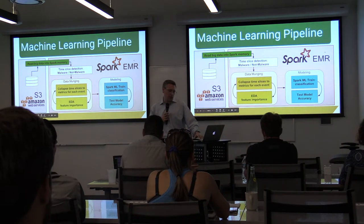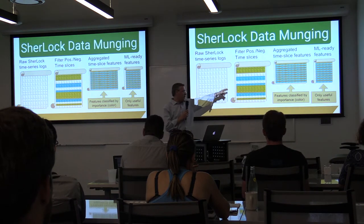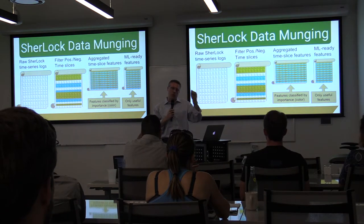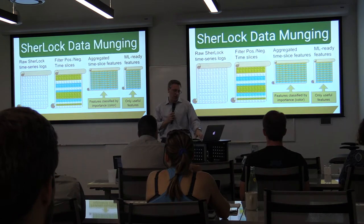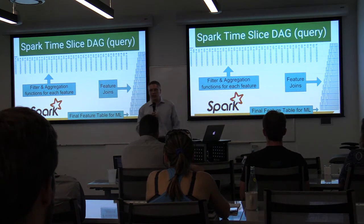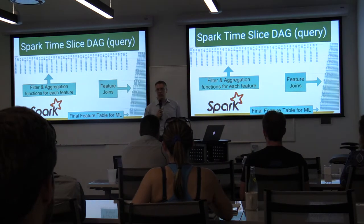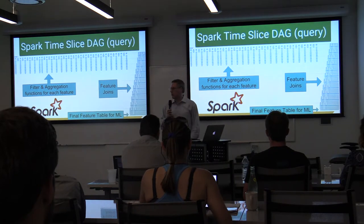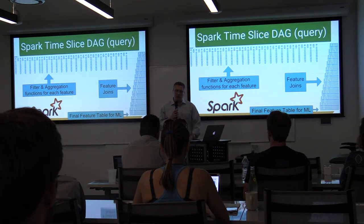I used the Spark machine learning libraries that are built in. Starting with raw logs, I had to determine whether events were malicious or benign, then vectorize the data so each row becomes a specific time-slice event. Spark also gives you a directed acyclic graph visualization — each column represents a filter and aggregation subquery, the right side shows all the joins across features, and the final machine learning model trains on just one small square at the bottom. Spark automates all of these things.